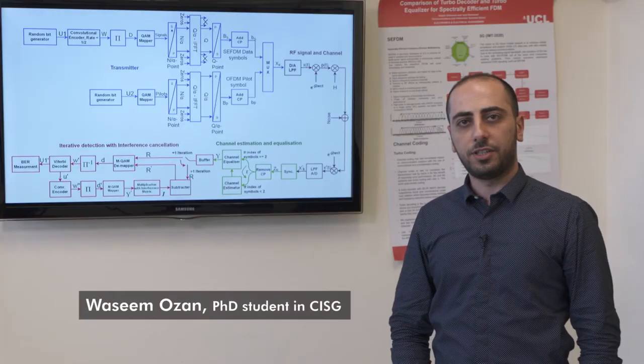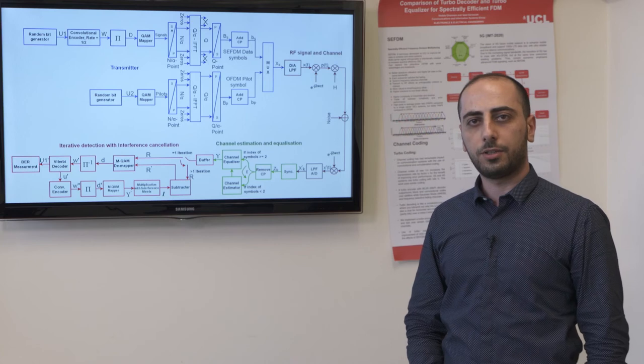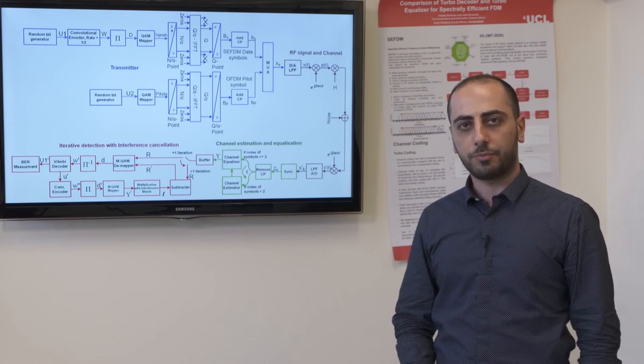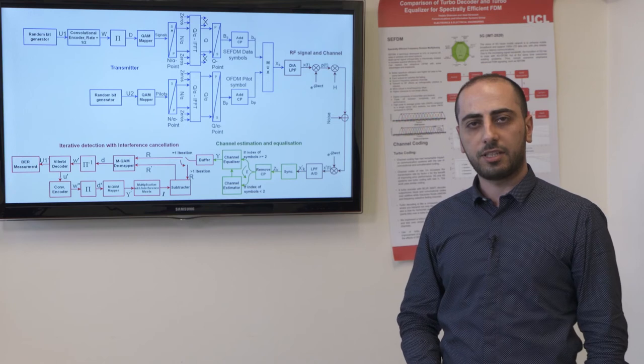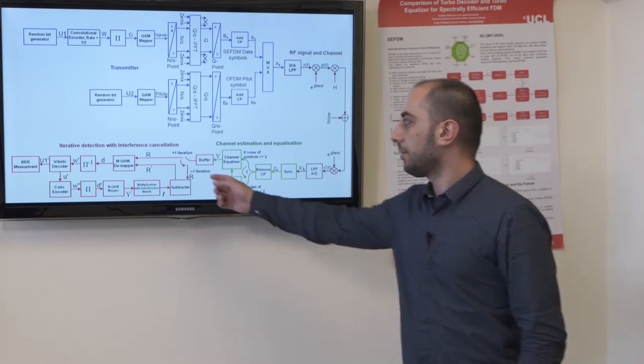At the detection stage, an iterative detector with interference canceller is utilized to recover the signal. In every iteration, interference is estimated and subtracted from the received signal before being passed to the next iteration.